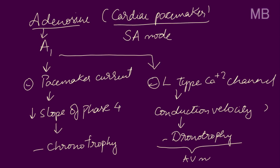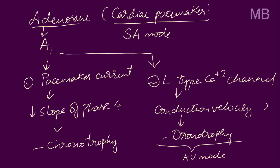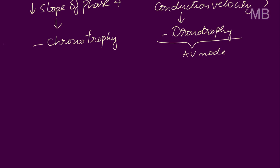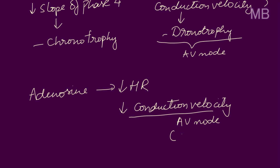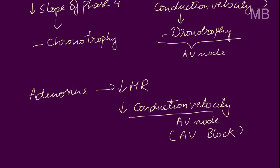This negative dromotropic effect is mainly seen in the AV node — the atrioventricular node. In terms of electrical conductivity, adenosine decreases heart rate and decreases conduction velocity, and this decrease in conduction velocity is mainly seen in the AV node, so it is referred to as atrioventricular block. However, when adenosine is infused into humans, heart rate actually increases because of baroreceptor reflexes caused by systemic vasodilation and hypotension.